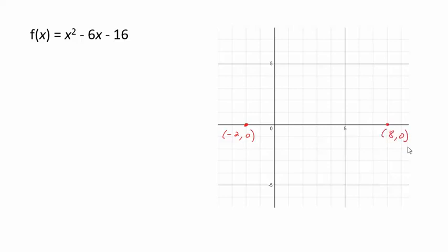Now the question is: where is the vertex of this parabola? If you think about the characteristics of a parabola — how it has an axis of symmetry and is symmetrical on either side — the vertex has to be somewhere on the line exactly halfway between negative 2 and positive 8. That halfway point is the x-value of the vertex.